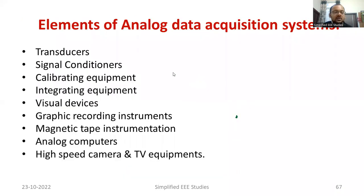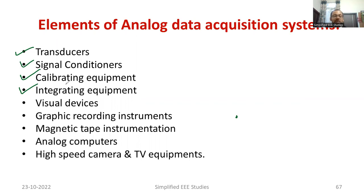Now, the elements used in a data acquisition system include: a transducer to convert the physical input into an electrical signal; a signal conditioner to provide strength to the signal; calibrating and integrating equipment for the measurement system, such as a multiplexer; visual devices like LCD and LED; graphic recording instruments; magnetic storage instruments, especially CD; analog computers; and high-speed cameras and TV equipment. There are varieties of equipment available.